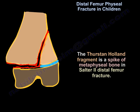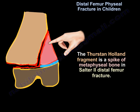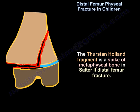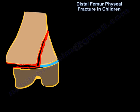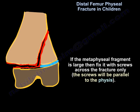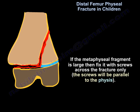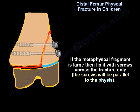The Thurston-Holland fragment is a spike of metaphyseal bone associated with a distal femur fracture. If the metaphyseal fragment is large, fix it with screws across the fracture only — the screws will be parallel to the physis.